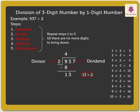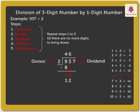We can divide 13 by 2. Again, use the table of 2 to find the product which is equal to or less than and nearest to 13. The nearest product is 12. So, we write 6 above the 3 in the quotient. As we know, 2 into 6 is equal to 12. Write the number 12 under 13.